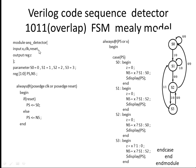Now we are in S1. In S1, if you get an input X of 0, you have to go to the next state S2. If you're getting 1, that means the sequence is not detected — hence you have to remain in the same state S1.